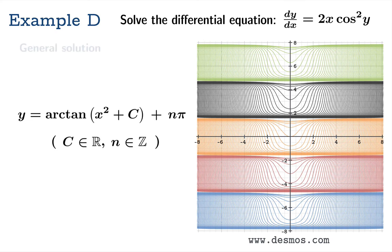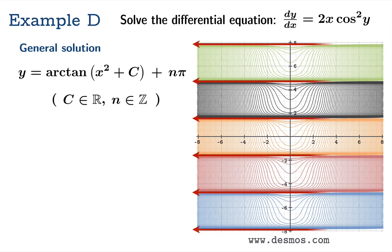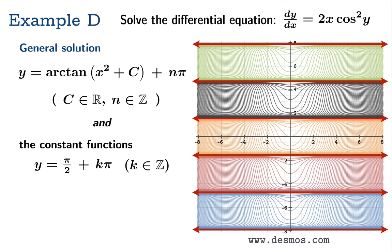You might think that's your general solution, but actually go back to your picture - you might notice it. This is not quite a foliation of the plane. There are some spots missing. Once again, they are horizontal lines: y equals pi over 2 and pi over 2 plus pi and so on. These constant functions are also solutions of the differential equation.